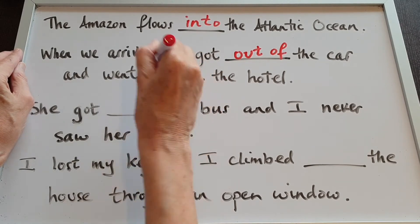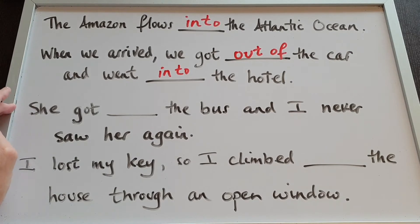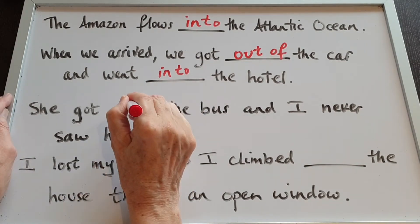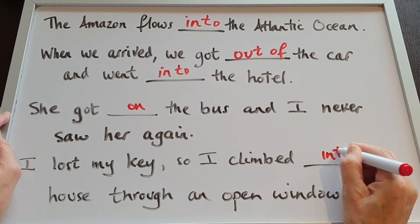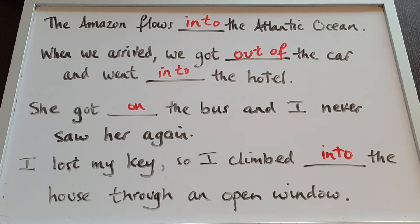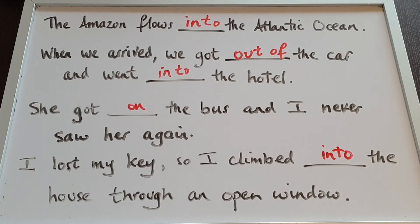Number three: She got on the bus and I never saw her again. And finally: I lost my key, so I climbed into the house through an open window. You can see the movement — the word 'into' paints a picture of climbing in through the window.